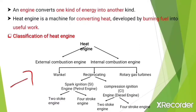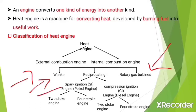Internal combustion engines are again classified into three classes: first, the kiln engine; then the reciprocating engine; and last, rotary gas turbines. The reciprocating engine is further divided into two types: spark ignition engine and compression ignition engine. The spark ignition engine is present in petrol engines, and the compression ignition engine is present in diesel engines.